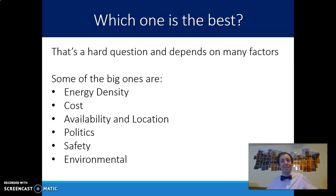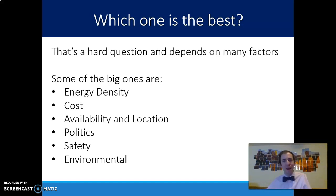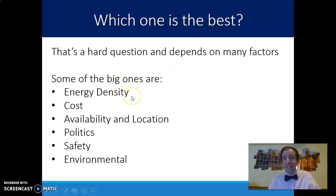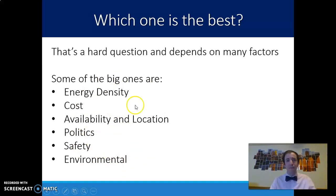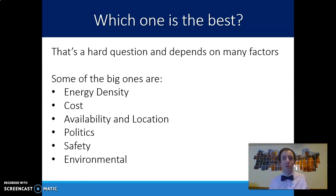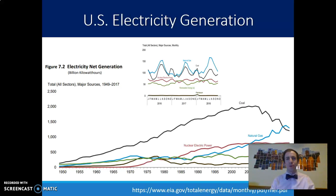A conversation we're going to get into a lot this unit is: which one of these is the best? There are 10 sources of energy — how do we choose the source that is most important for us? This is a hard question with many different factors. One is energy density — we'll look at that a little bit today. But then of course we have cost, availability, politics, safety, and environmental concerns. All of these form one large conversation that isn't easy to solve. It would be great if we could say everyone's going to solar power — it's clean and available — but there's a lot in the way of making that a reality.